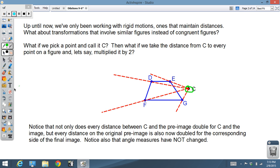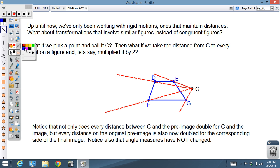Now I'm going to take every distance, so the distance between C and E, and what if I doubled it? And then took the distance between C and D and doubled it, and did the same for C, F and C, G, and then took those final points and connected the dots. Let's make a figure here out of the endpoints. And look what we get.